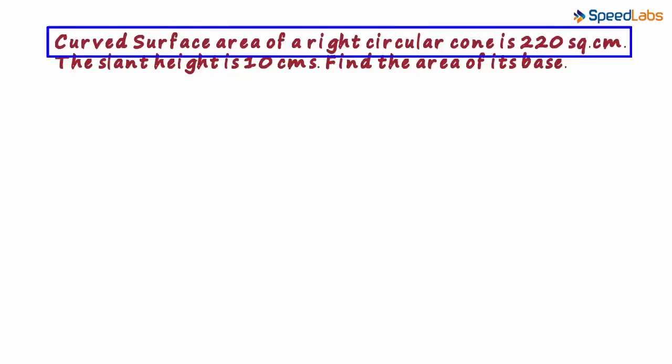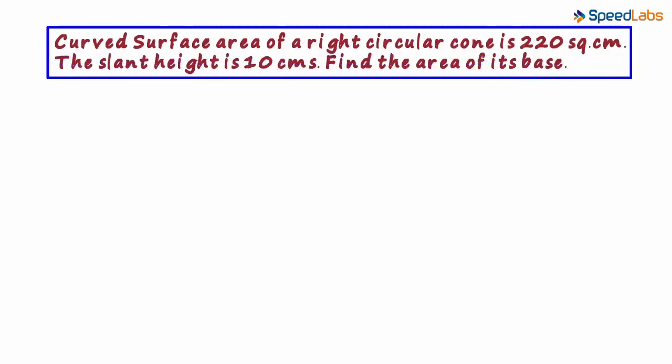Curved surface area of a right circular cone is 220 square centimeters. The slant height is 10 centimeters. We have to find the area of its base.